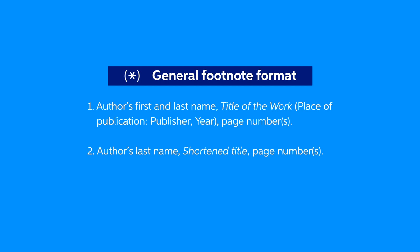Now, in parentheses, write the place of publication, followed by a colon, and then the name of the publisher, followed by a comma, and then the date of publication. After the closed parenthesis, put a comma and then write the full range of page numbers you are citing from throughout your paper. This is the information you need to include if you aren't using a bibliography and if this is the first time you are referencing a particular source. All other times you can use the shortened footnote form of the author's last name, shortened title — usually one or two words — and page number.